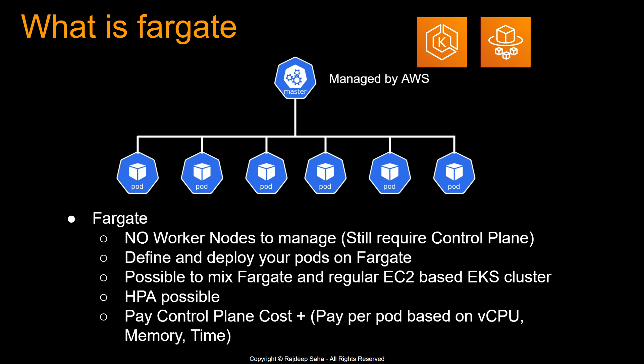For cost, this is a main saving point for enterprises. Since AWS is managing the control plane, you still pay a fixed amount for it. For the pods, you pay per pod based on vCPU, memory, and the time the pod is running. If you deploy a pod and then terminate it once done, you're not going to pay for any idle cost like you would with EC2s.